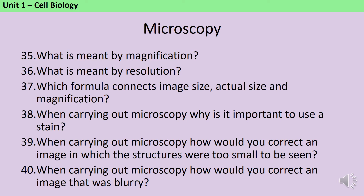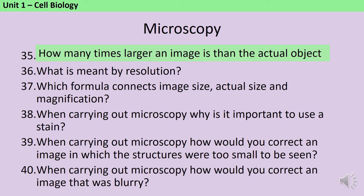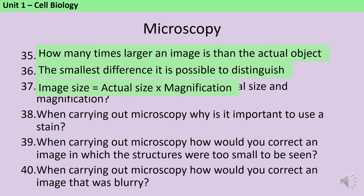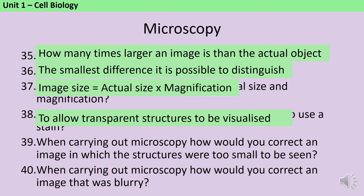Magnification is how many times larger an image is than the actual object it's based on, whereas resolution is the smallest difference between two objects that you can differentiate. The formula connecting image size, actual size and magnification is: image size equals actual size multiplied by magnification. It's important to use a stain because this allows us to visualise transparent structures.